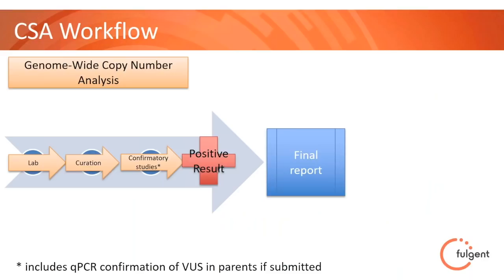As part of CSA, the first thing we do is this genome-wide copy number analysis. If it's positive — if we have a large deletion or duplication that includes an OMIM gene, or is a known recurrent deletion or duplication — we'll do confirmatory studies with qPCR. If you submit parents along with the specimen, we'll do testing of the parents at that time as well, so we can see if it's de novo or inherited from a parent. If it's likely pathogenic or pathogenic, we will report that out as a positive result, and you're done.